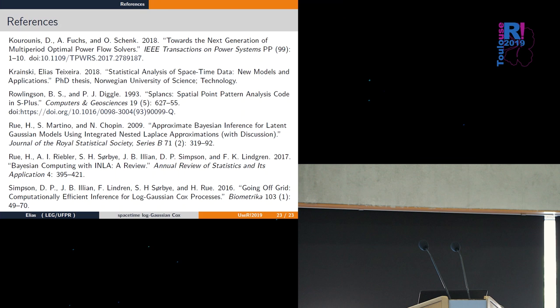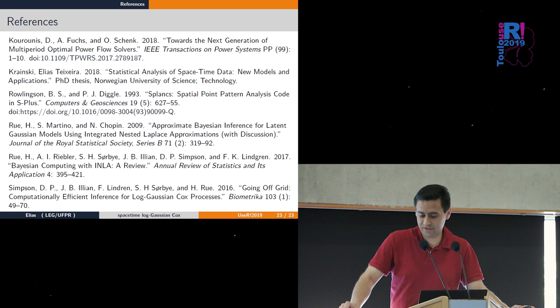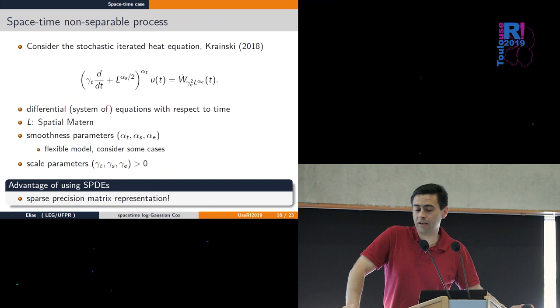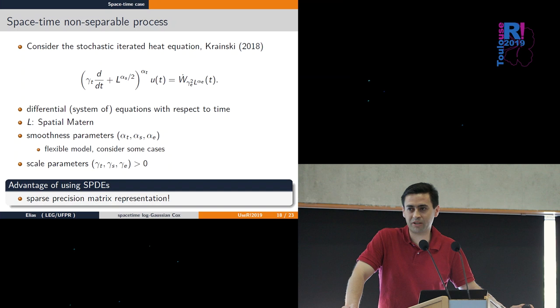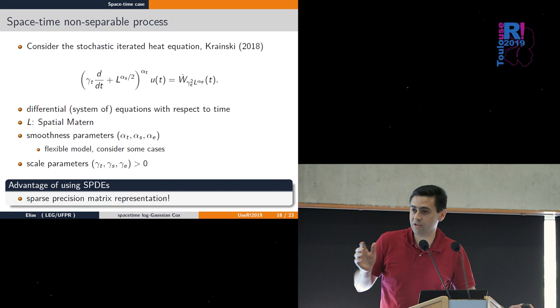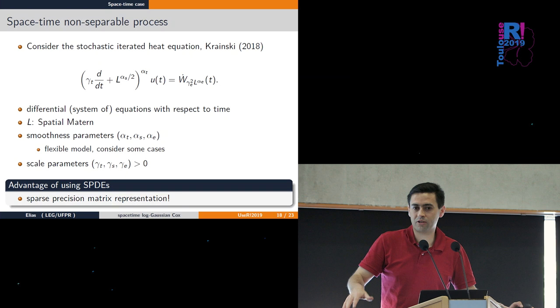Question about computational speed advantage: Gaussian processes working with covariance matrices scale as n³, which is not fast. The point is to use a subset of Gaussian processes which are Markovian. When you have a Markovian Gaussian process, you can use fast computations with this kind of restriction.